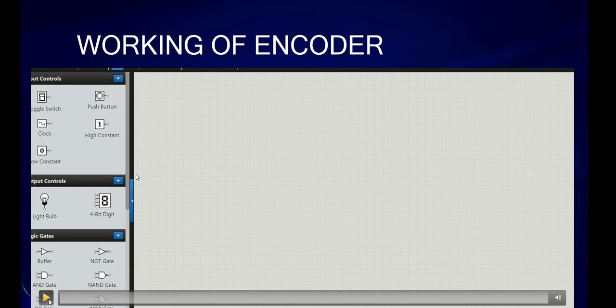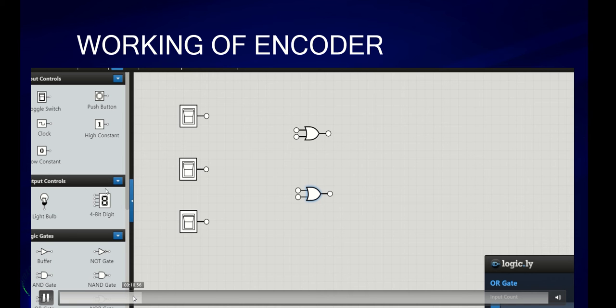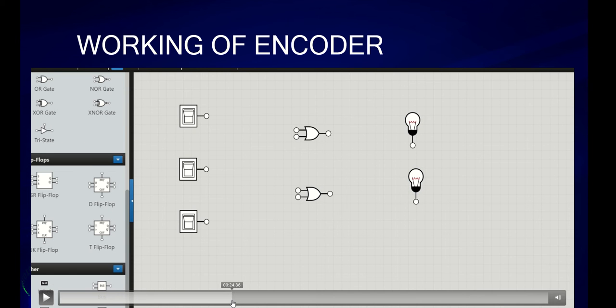The working of encoder has been given here. We will be requiring 3 toggle switches, 2 OR gates and 2 lights to see the outputs. Now, let's label them.